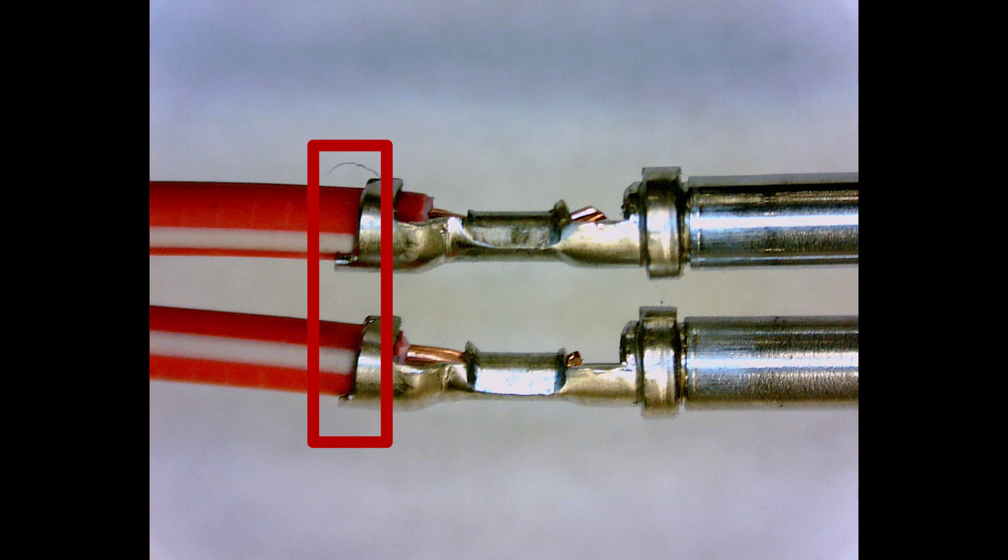Keep in mind that when adjusting the bell mouth, you also change the cutoff tab length. Highlighted here, you can see that the tab length is longer on the crimp where most of the bell mouth is away from the wire.